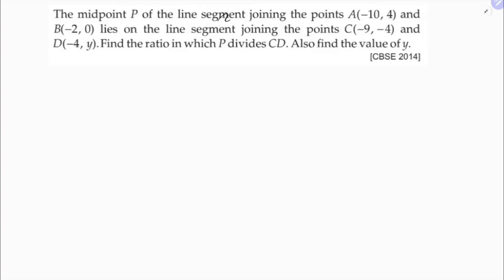Find the midpoint P of the line segment joining the points A and B, where A is (-10, 4) and B is (-2, 0). Here P is the midpoint, so first I'll find P.